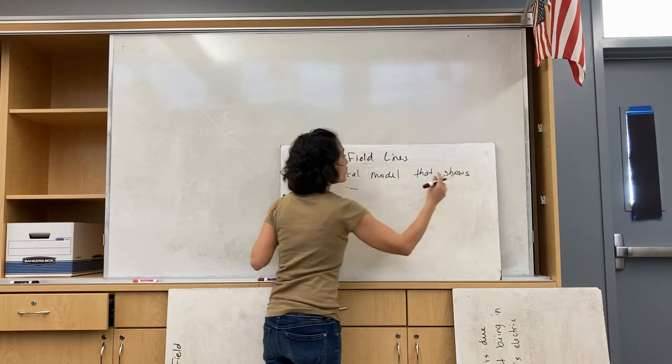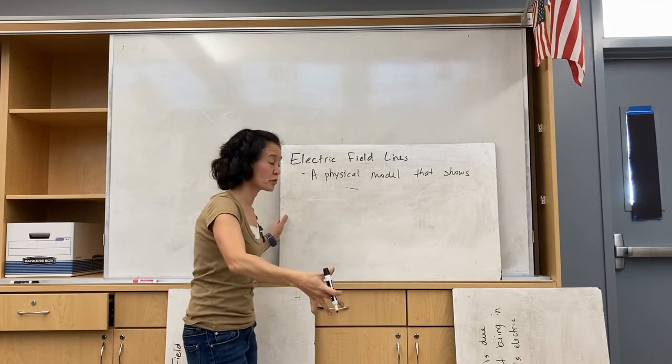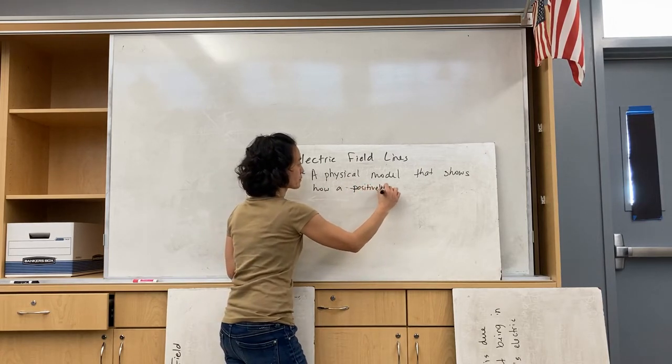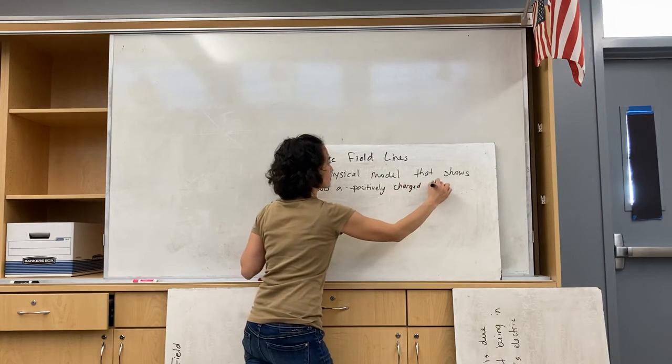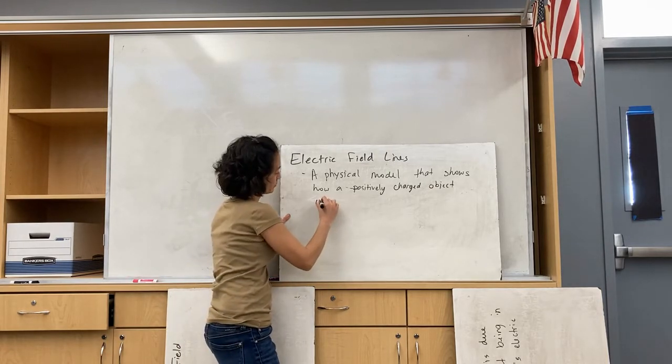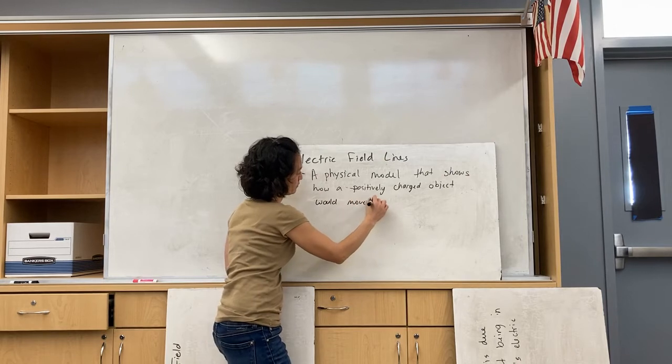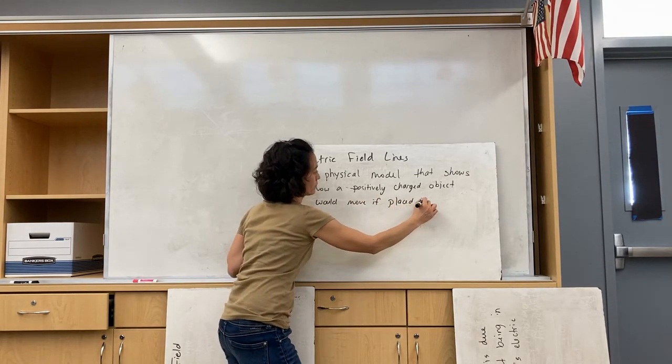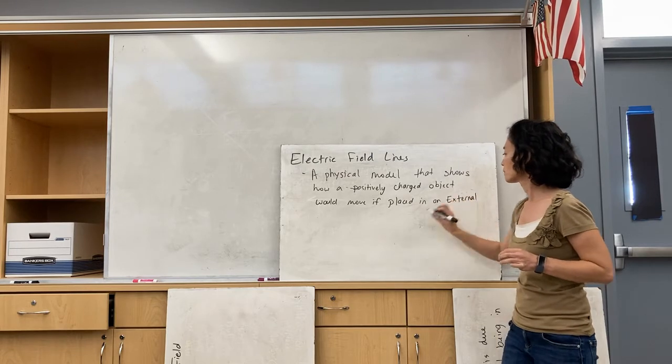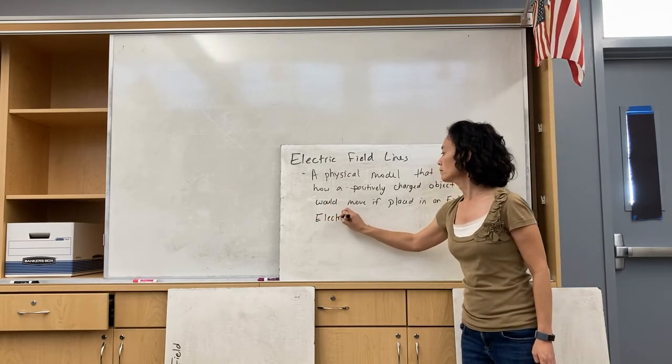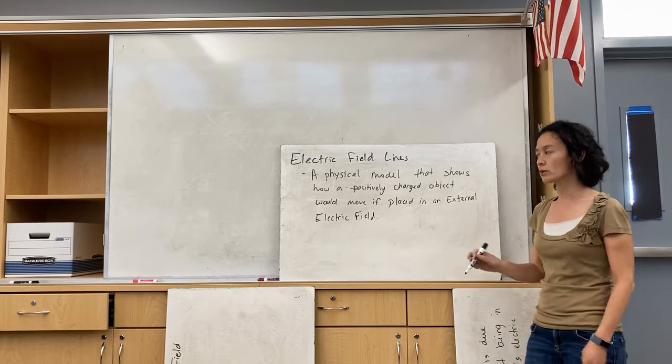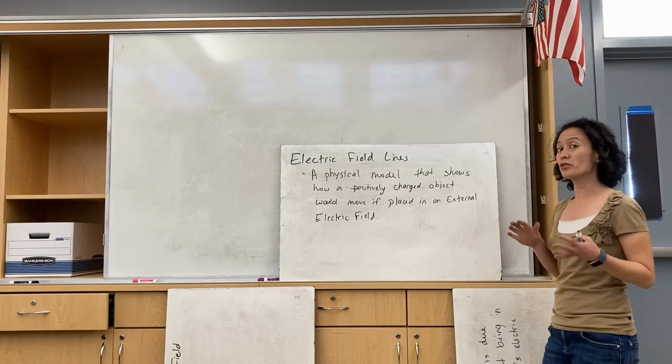This is just a definition, arbitrarily they picked we want to show how a positive charge would move. It's a physical model that shows how a positively charged object would move if placed in an external electric field. Because of this definition that it shows how positively charged object would move, that determines how electric field lines are drawn.